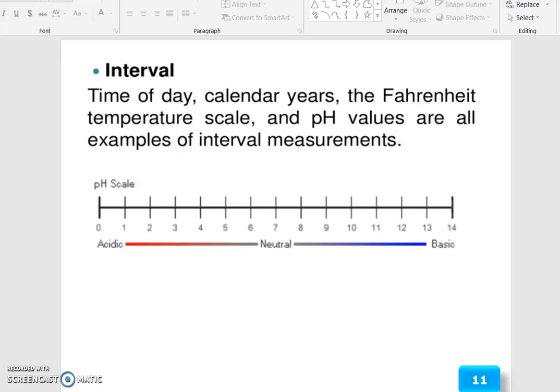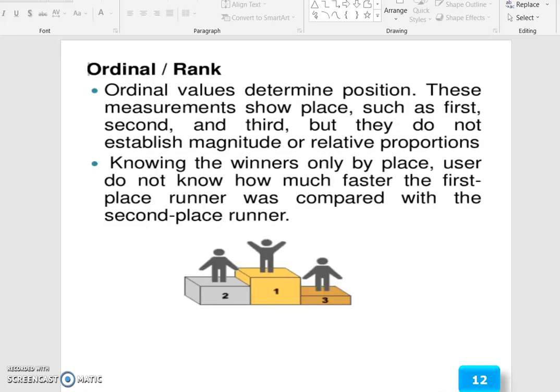Below 6.5 is acidic. More than 8.5 is basic level. It is under the neutral level from 6.5 to 8.5. Below that acidic and more than that is alkalinity. Then ordinal or rank level. Ordinal values determine position. This measurement shows place such as first, second, and third, but they do not establish the magnitude or relative proportions. Knowing the winners only by place, users do not know how much faster the first place runner was compared with the second place runner.